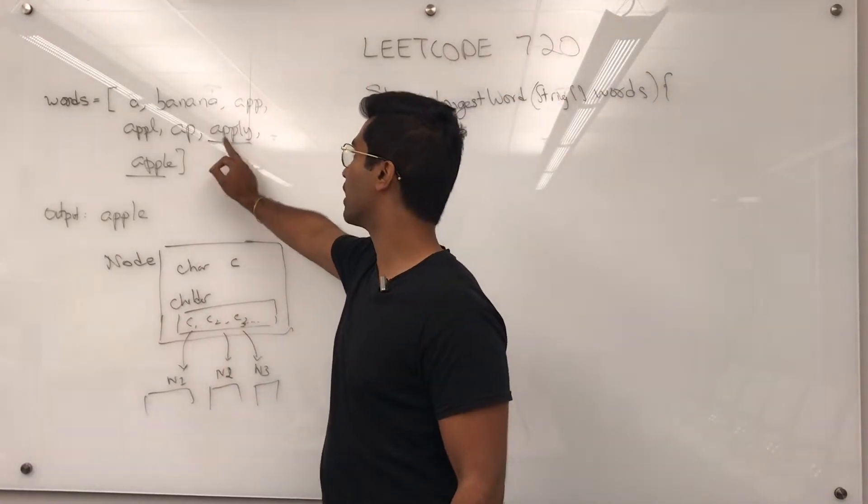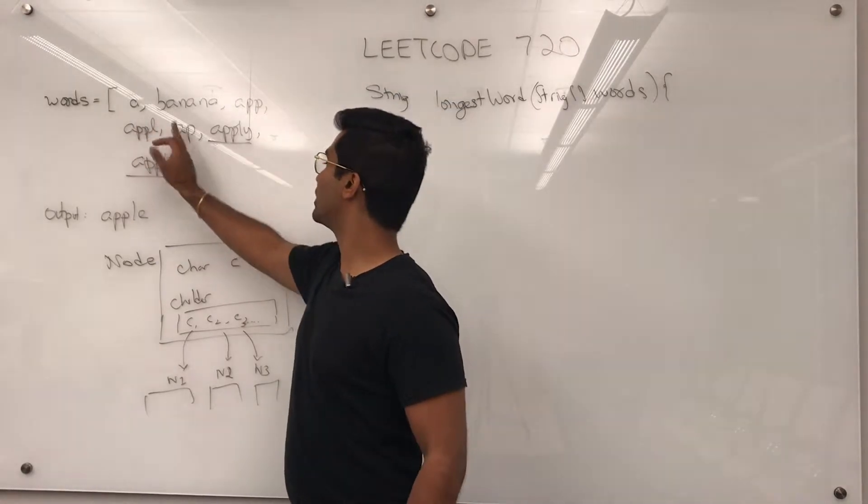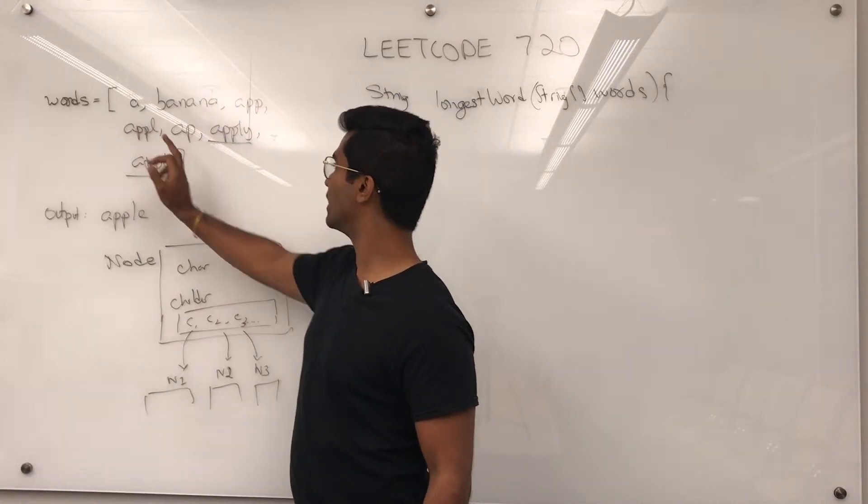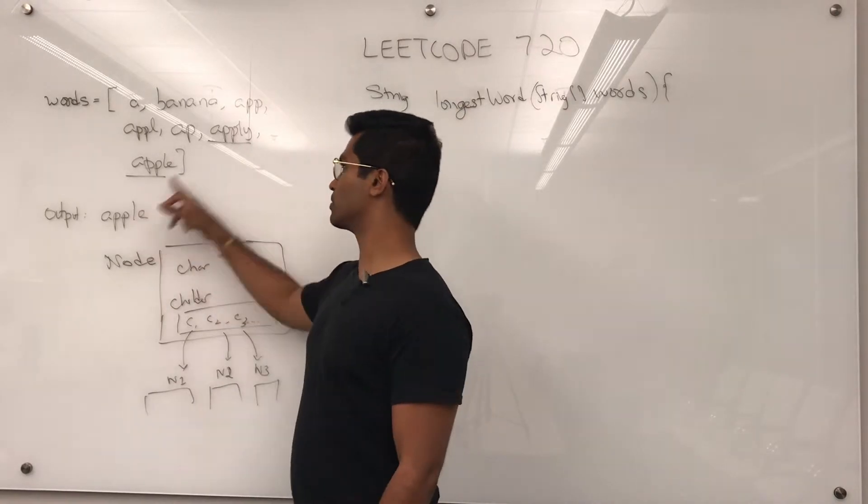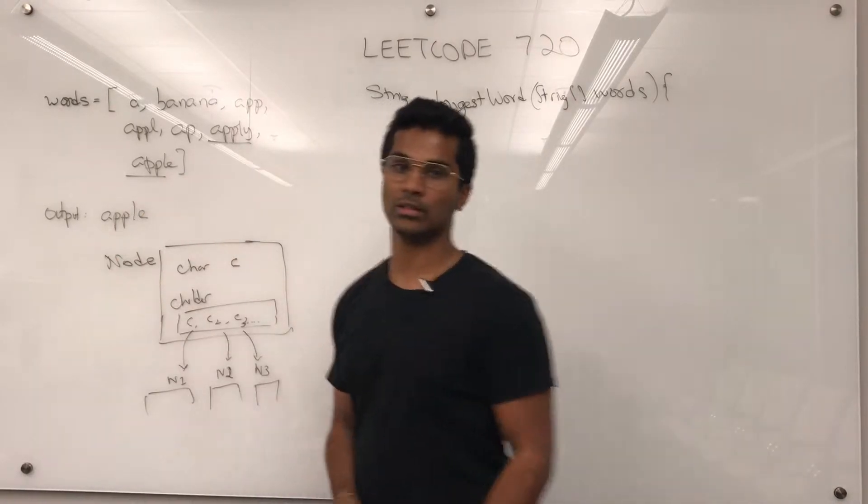So we can make apple and apply by doing like a, a, p, a, p, p, a, p, p, l. And then we can either choose apply or apple, but apple comes before apply. So that's why we're going to do this.